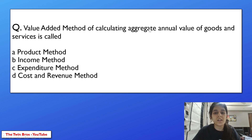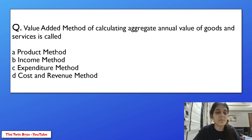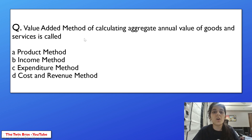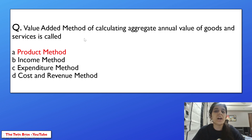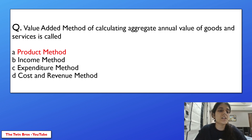Value added method of calculating aggregate annual value of goods and services is called — product method, income method, expenditure method, or cost and revenue method? The value added method is also called the product method. Option A.